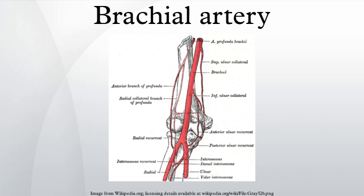The brachial artery is the major blood vessel of the arm. It is the continuation of the axillary artery beyond the lower margin of the teres major muscle. It continues down the ventral surface of the arm until it reaches the cubital fossa at the elbow, where it divides into the radial and ulnar arteries which run down the forearm.